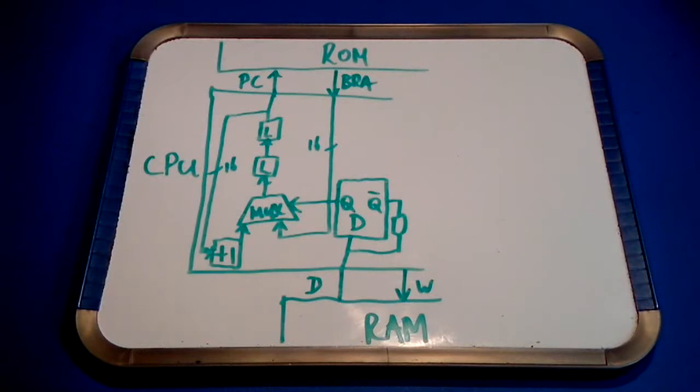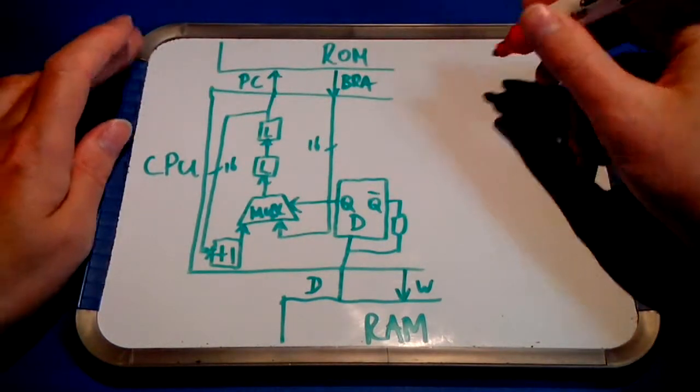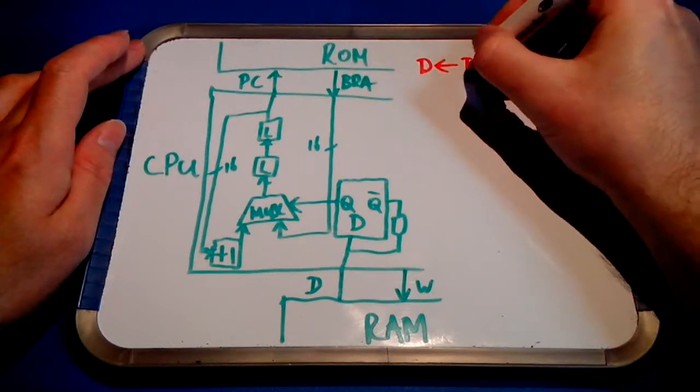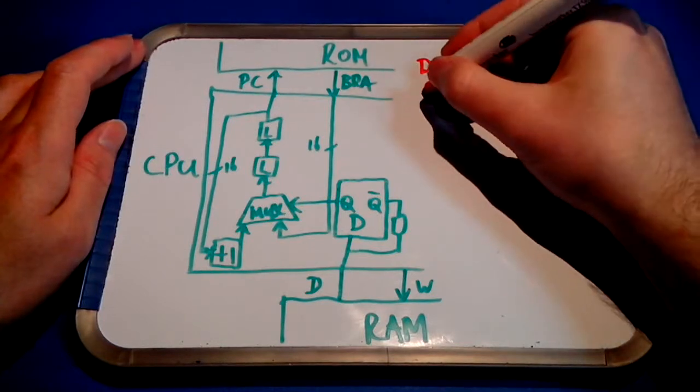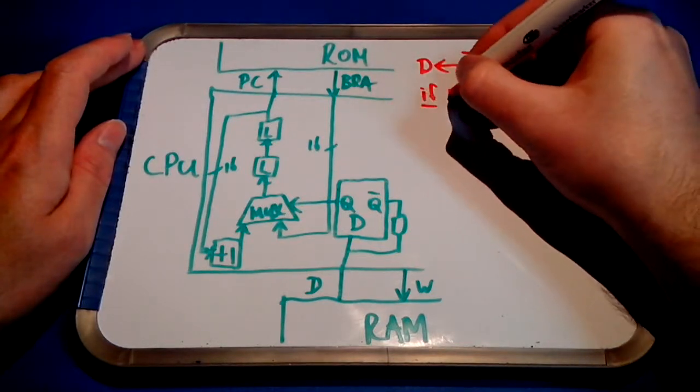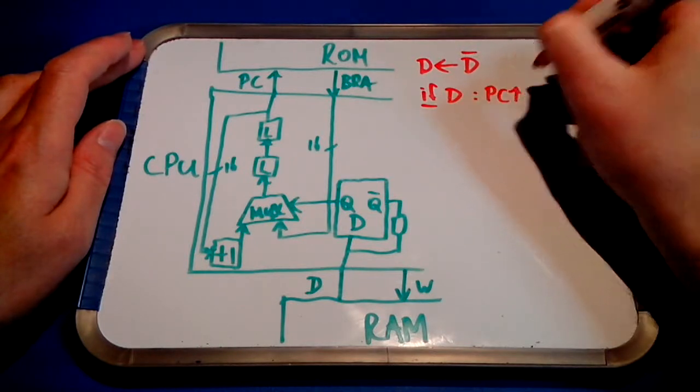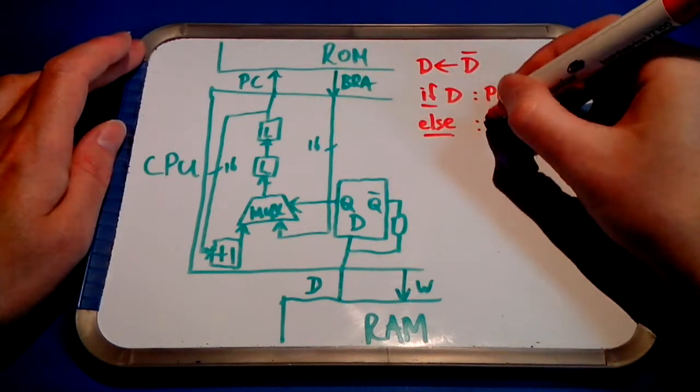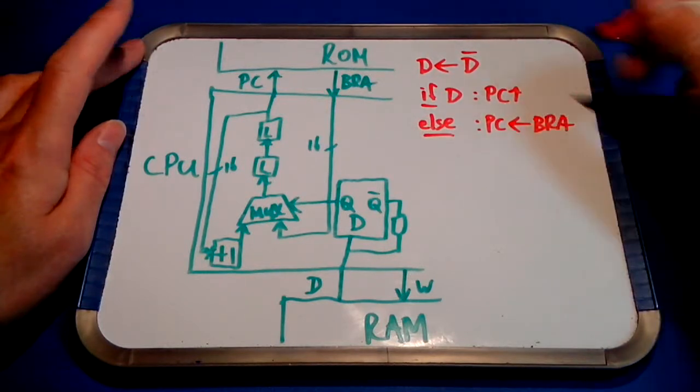Now again, what each subsystem does is discussed in another video. We won't do that here. In short, let's write down what the CPU does each instruction cycle. So first, the data bit is inverted. So the data bit is replaced with the inverse of the data bit. After that, if the data bit is 1 after inversion, the program counter is simply incremented. And else, if the data bit is 0 after inversion, the program counter is replaced with the contents of the branch address. So that's all.